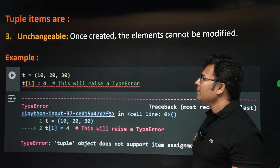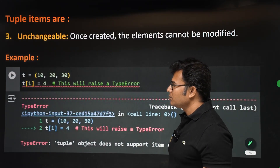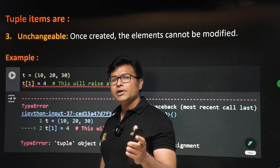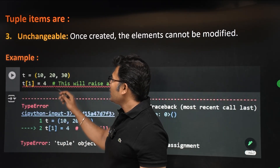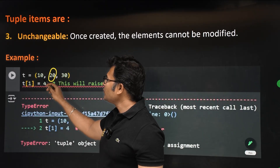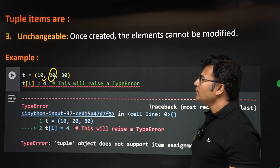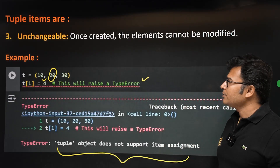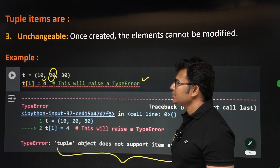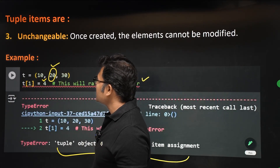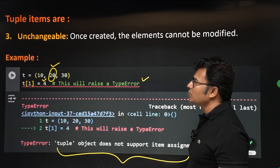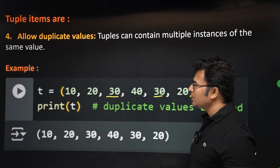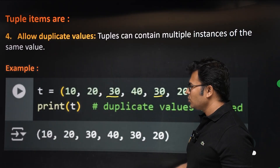Tuples are unchangeable — if you try to change a tuple it will raise an error. For example, if t[1] is already 20 and you try to set t[1] = 4, it will raise a TypeError saying 'tuple object does not support item assignment.' You have to create a new tuple instead. Tuples also allow duplicate values; for example, having 30 twice will not give any error — it is not a set.